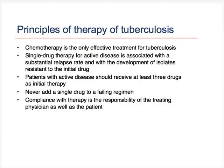From this trial, we derived most of the important principles of therapy of tuberculosis, shown on the following slide. The first principle is that chemotherapy is the only effective treatment for tuberculosis. The second: single drug therapy for active disease is associated with a very high relapse rate and invariably with the development of isolates of TB that are resistant to that single drug. Therefore, patients with active tuberculosis disease should receive at least three drugs, and in most cases four drugs, as initial therapy to prevent the emergence of drug resistance. One should never add a single drug to a regimen that seems to be failing.